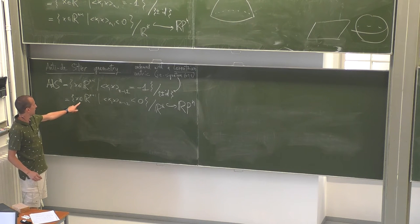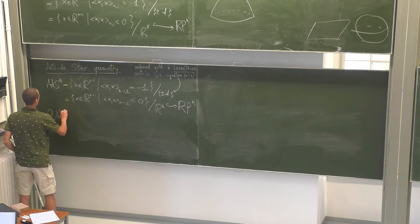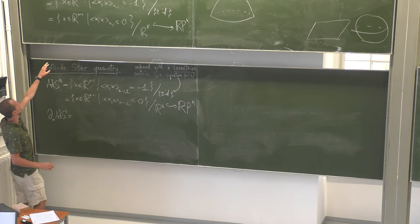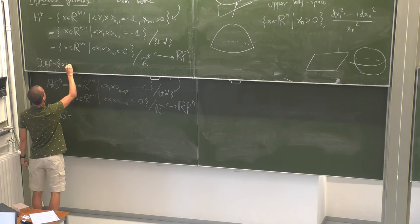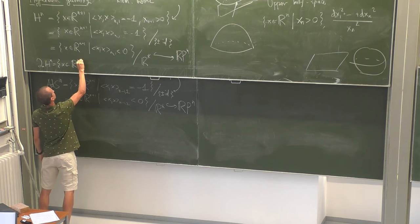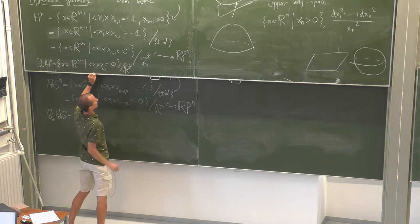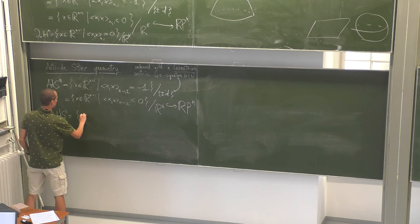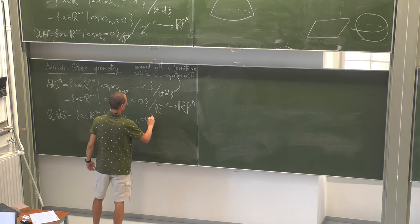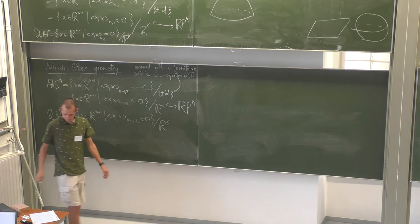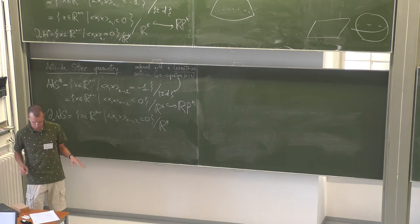The second space — the projective model — has the advantage that we can easily define its boundary at infinity. This is the same thing one does in hyperbolic geometry: the boundary of hyperbolic space is the projectivization of the null cone, and here we do the same thing. So this is the definitions, and now in this mini-course we will be mostly interested in three-dimensional anti-de Sitter geometry.